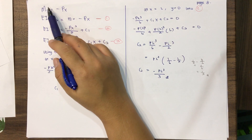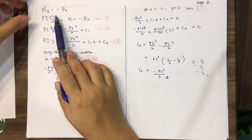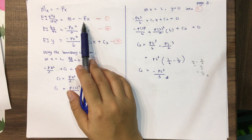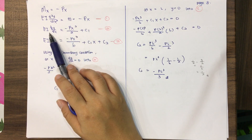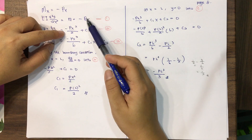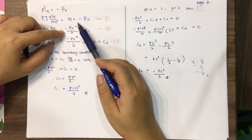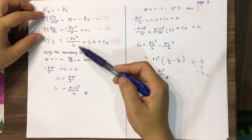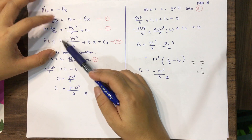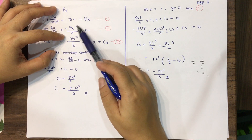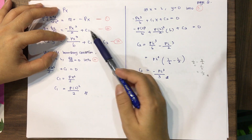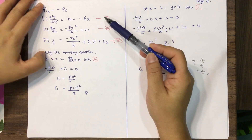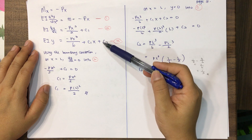Using the bending moment equation, EI d²y/dx² equals M(x) equals negative Px. Integrating once gives EI dy/dx equal to negative Px²/2 plus C1 — this is the slope-deflection equation. Integrating once more gives EI y equal to negative Px³/6 plus C1·x plus C2 — the deflection equation. So we now have three equations: bending moment, slope deflection, and deflection.